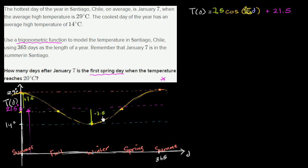So we want this value, not this value. This one will be the day in fall when the average high temperature is 20 degrees Celsius. This is the first day of spring where the average high temperature is 20 degrees Celsius. This is the first spring day when the temperature reaches 20 degrees Celsius. So this is the value that we want.